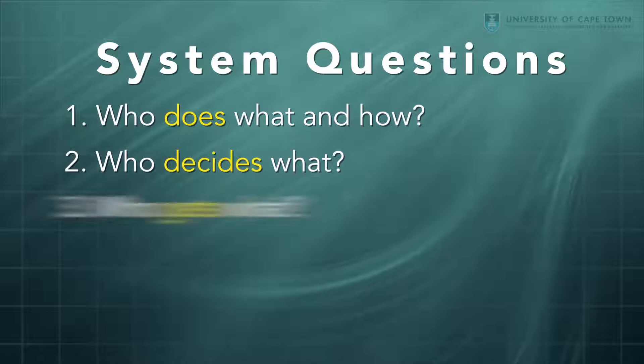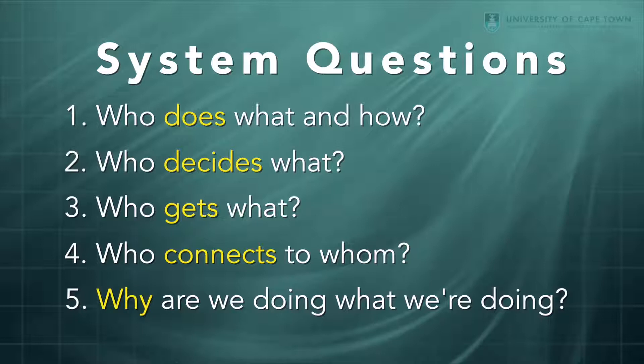So they are: who does what and how, who decides what, who gets what, who connects to whom, and why are we doing what we're doing in the first place. Any social innovation is going to be challenging the answers to at least one of these questions within the system that it's working, and maybe many more of the answers.